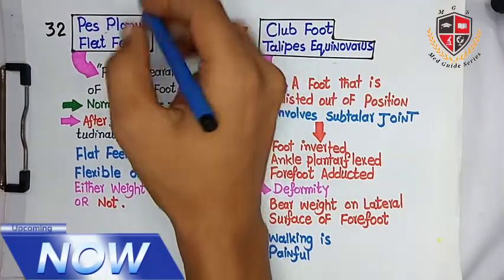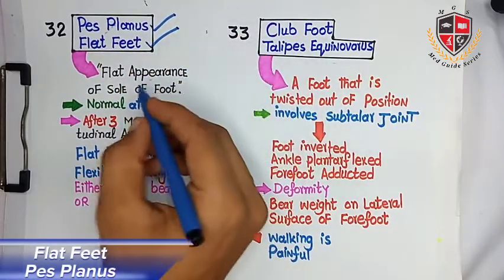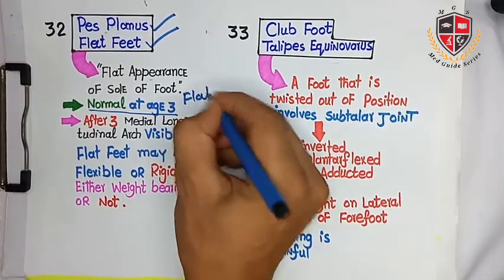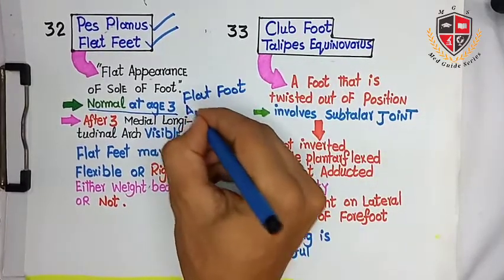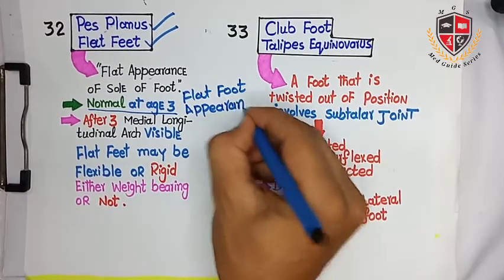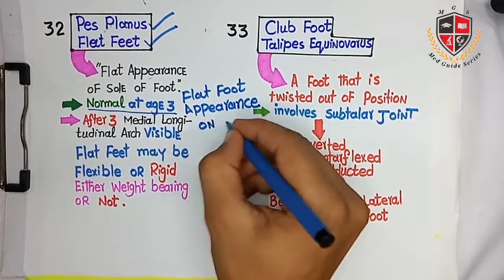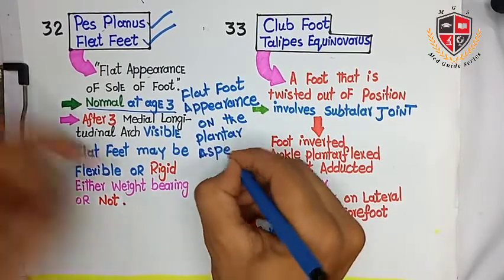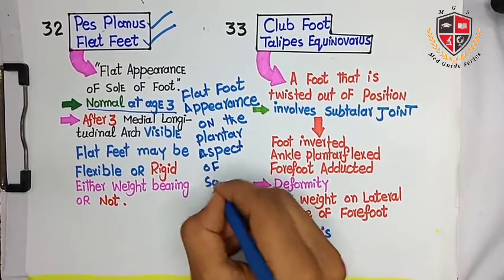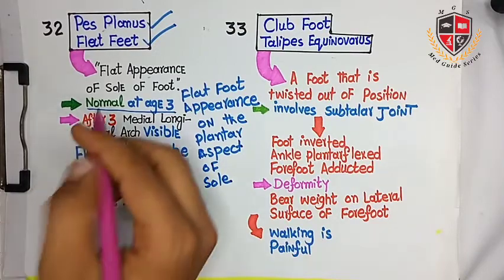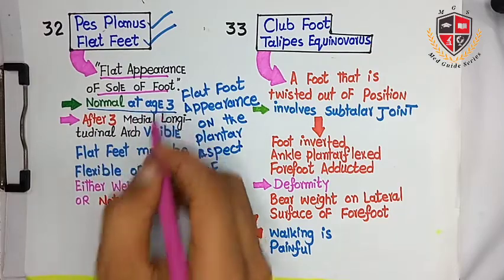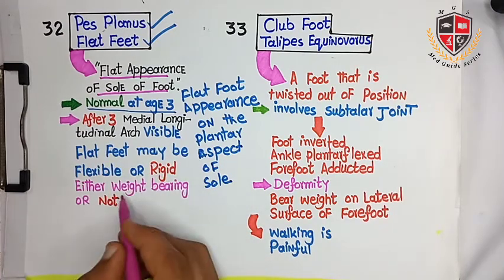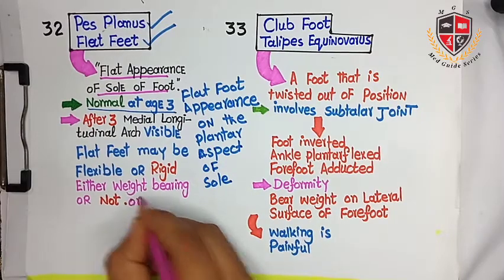The next clinical is pes planus, meaning flat feet. Flat feet are normal at age 3. The flat appearance on the plantar aspect of the foot is due to the maximum fat pad position on the plantar aspect of the sole. After age 3, the medial longitudinal arch with flat feet may be flexible or rigid, either weight bearing or not.